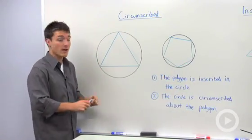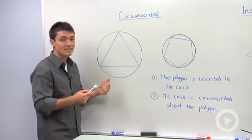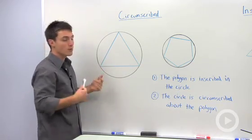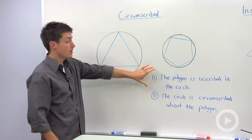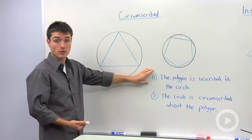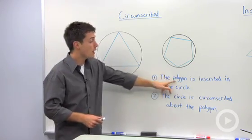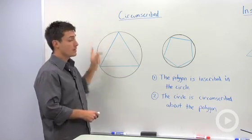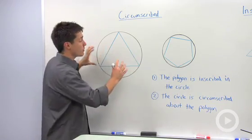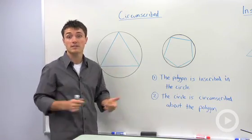In this first example we have a triangle that is inside of a circle. Well, the way that we could say this is either the polygon is inscribed in the circle. So that's the general way. But since we have a triangle, I could say the triangle is inscribed in the circle. Notice that the triangle is within the circle, so that's how you could say it's inscribed.